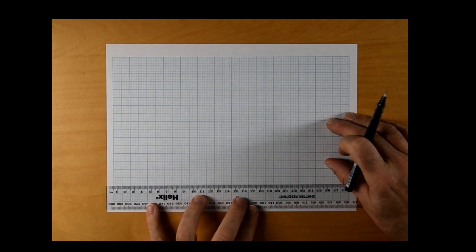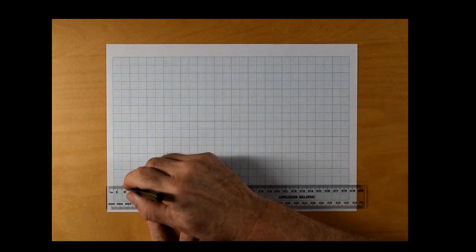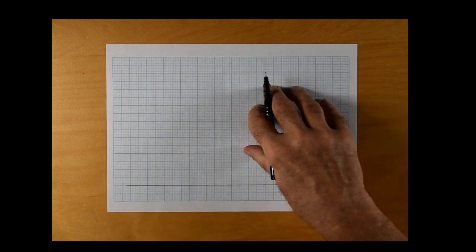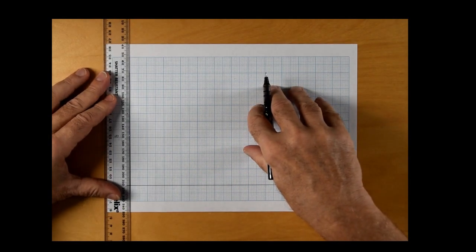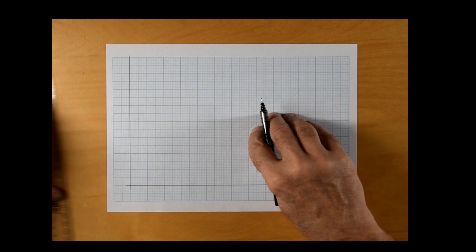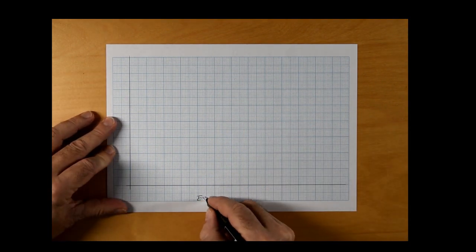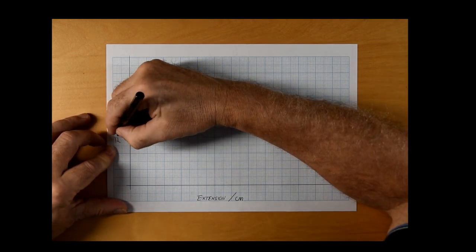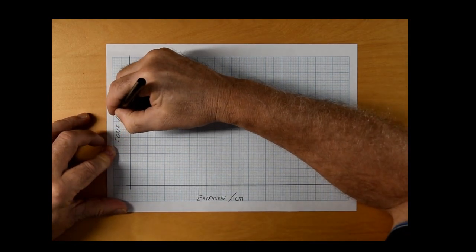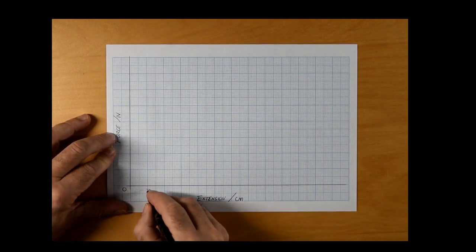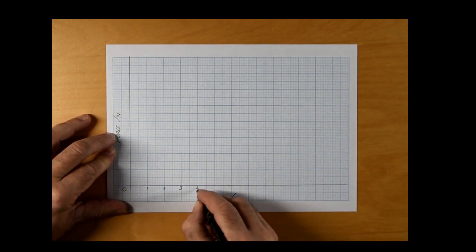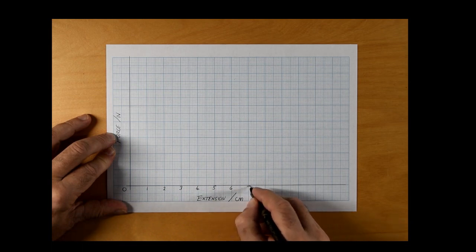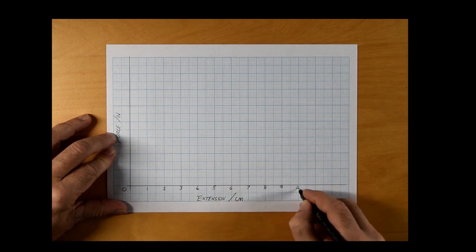And, as always, here is the inevitable graph. For historical reasons, to do with the original testing machines, force is always plotted up the side and extension along the bottom. I know force was our independent variable, but the original machines were set up to see how much force was required to stretch by a fixed amount.